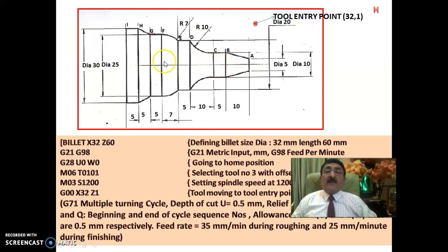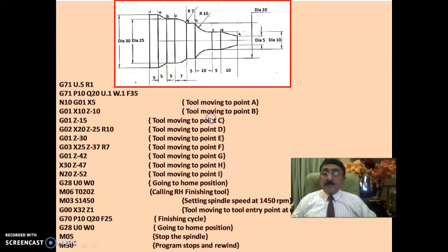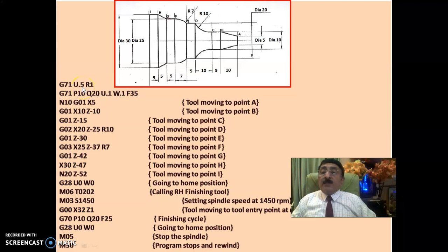Z is 0 at the workpiece face; as you go along the part it becomes minus 10, minus 15, minus 25, and so on. From the safe position X32 Z1 — 1 mm away from the workpiece — I have given the G71 multiple turning cycle: G71 U0.5 R1, then G71 P10 Q20. G71 U0.5 means the depth of cut for each pass is 0.5 mm.